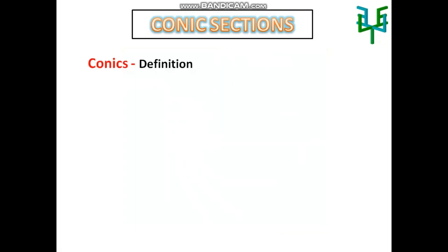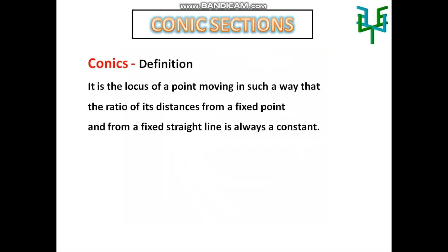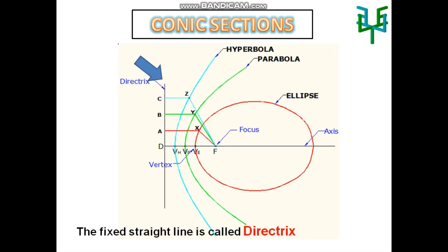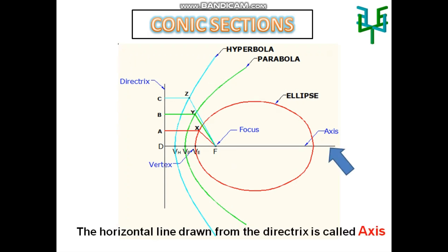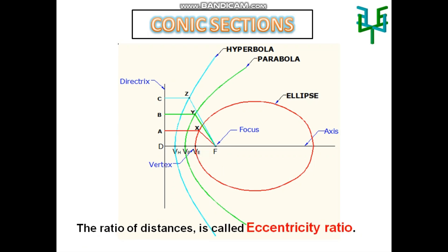Conics is defined as the locus of a point moving in such a way that the ratio of its distances from a fixed point and from a fixed straight line is always a constant. The fixed point is known as focus. The fixed straight line is called directrix. The horizontal line drawn perpendicular to the directrix is called axis. The point of intersection between the locus and the axis is called vertex.